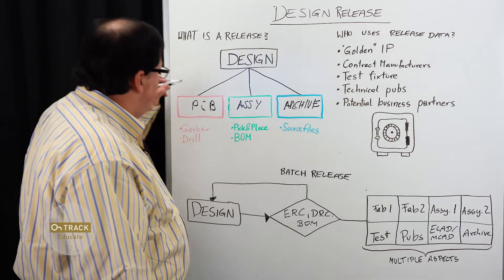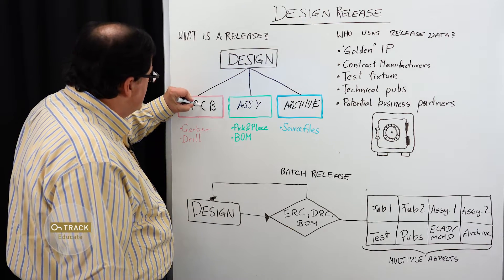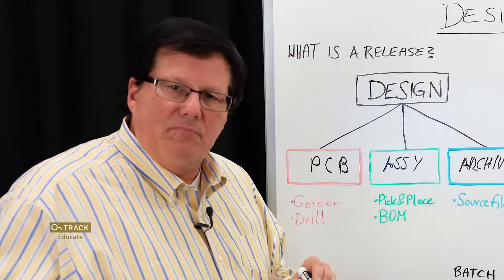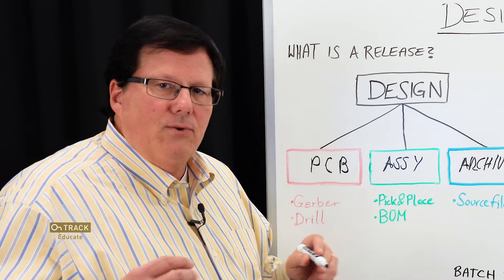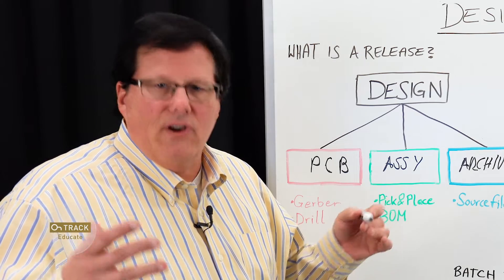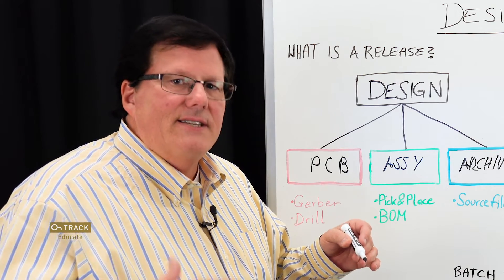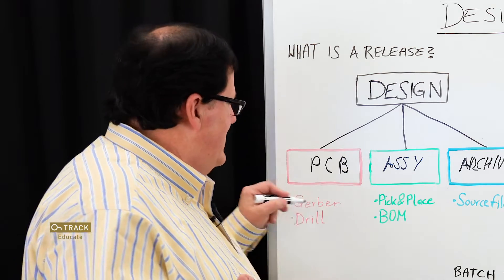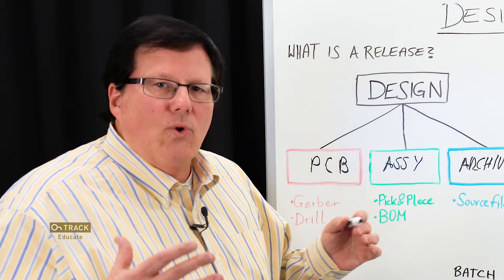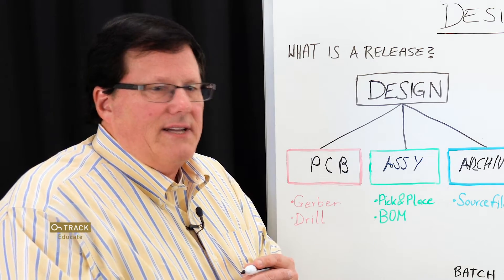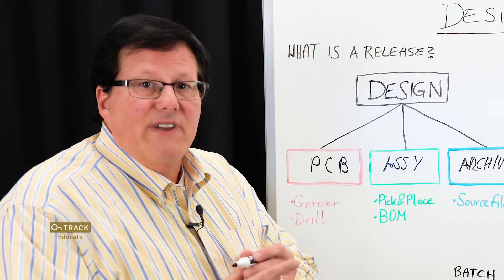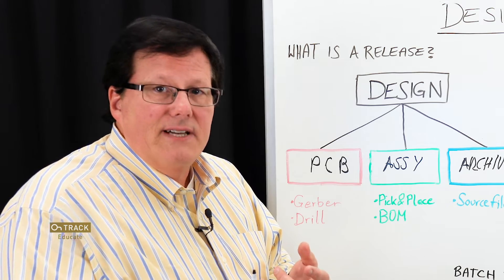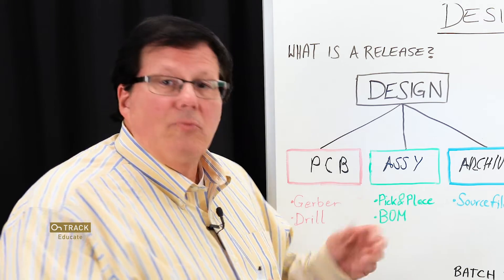Each of these have various outputs. In the case of PCB, Gerber is a standard output used for conveying the artwork — the traces, the layers, the silk screen, et cetera — for printed circuit board fabrication. There are also other formats. Most customers use Gerber, but there's also ODB Plus and Gerber X2.